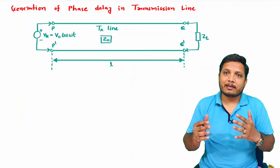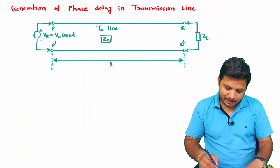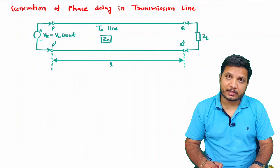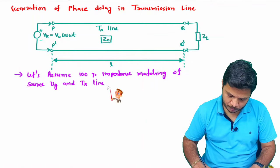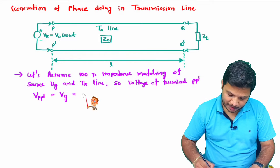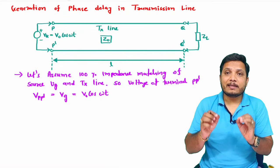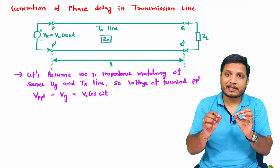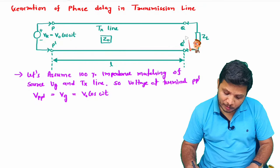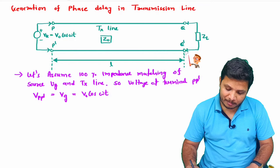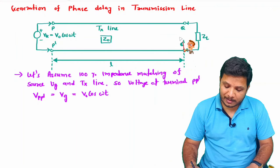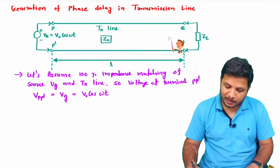With 100% impedance matching, the voltage at terminal PP dash equals the supply voltage Vg, which is V0 cos(omega t). Once the signal is inserted into the transmission line, it propagates in the forward direction and reaches the load at terminal QQ dash. To receive the signal at the load, it is also compulsory to have impedance matching of the load with the transmission line.